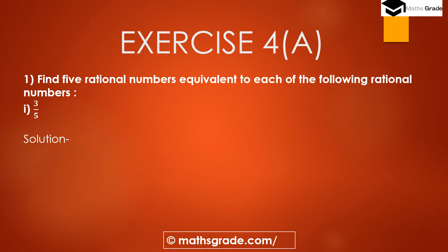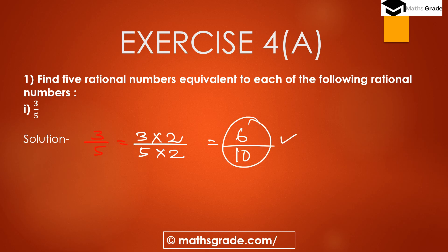We know an equivalent rational number is obtained if we multiply the same number in both the numerator and denominator of a given rational number. So for 3/5, if we multiply both numerator and denominator by 2, we get 3×2=6 and 5×2=10, giving us 6/10 as the first equivalent rational number.